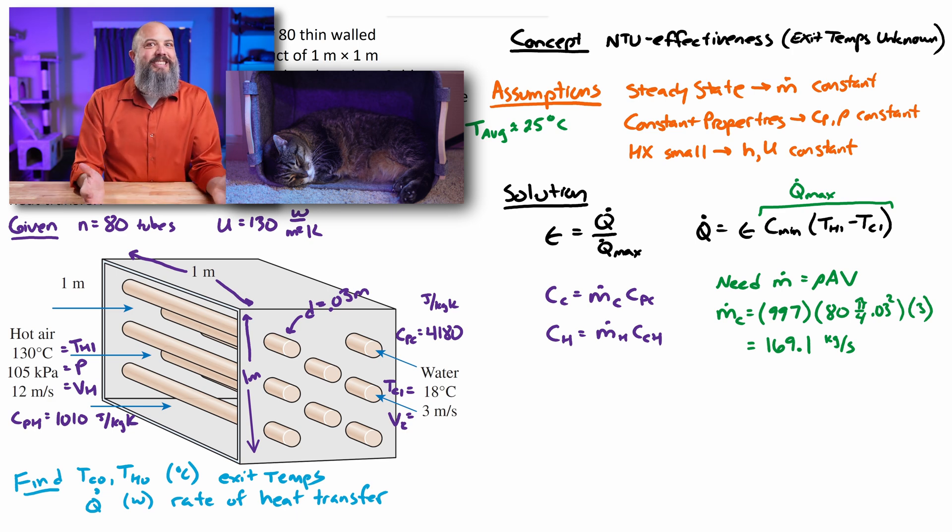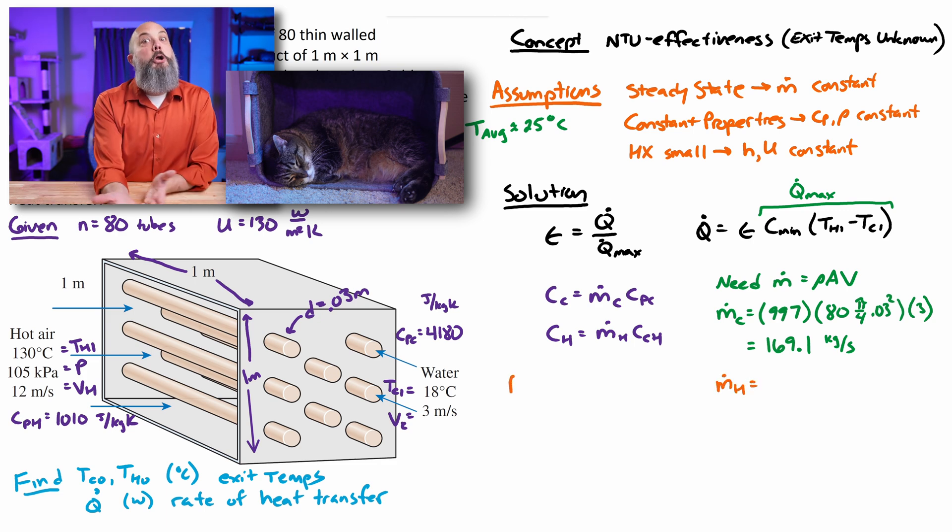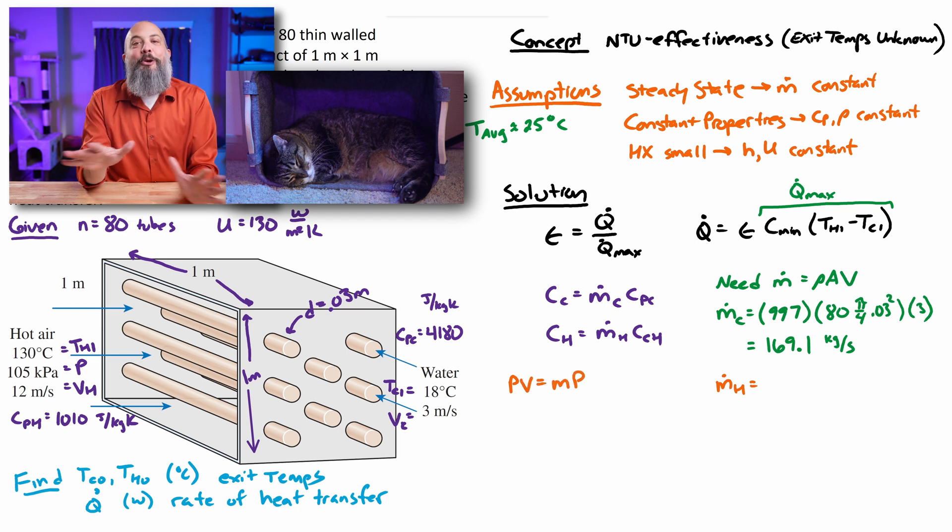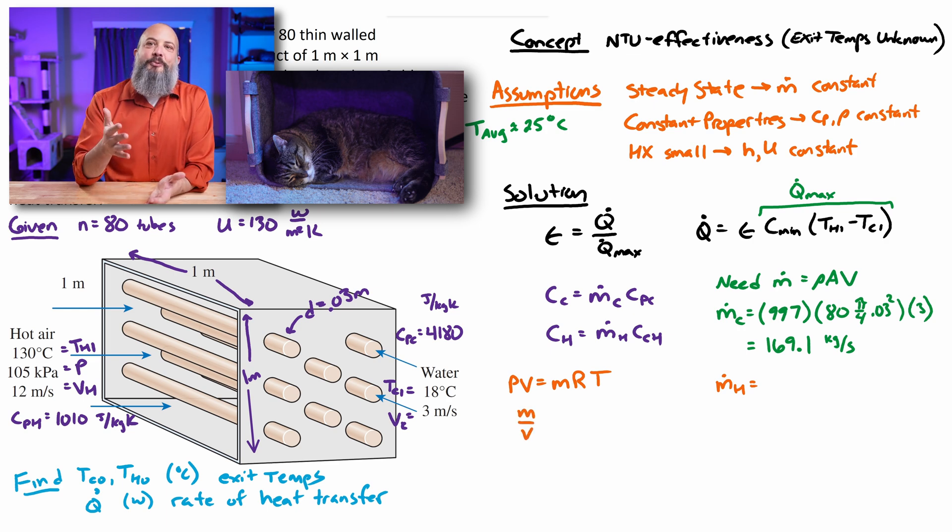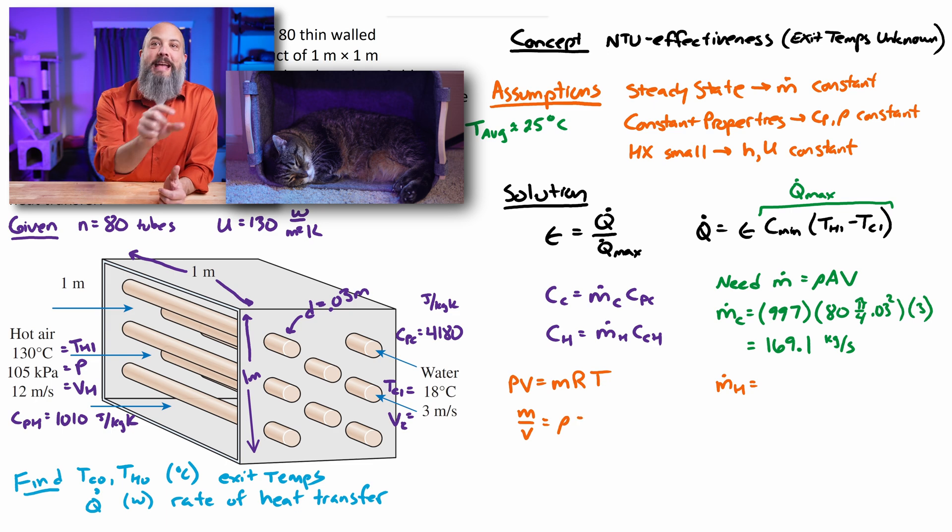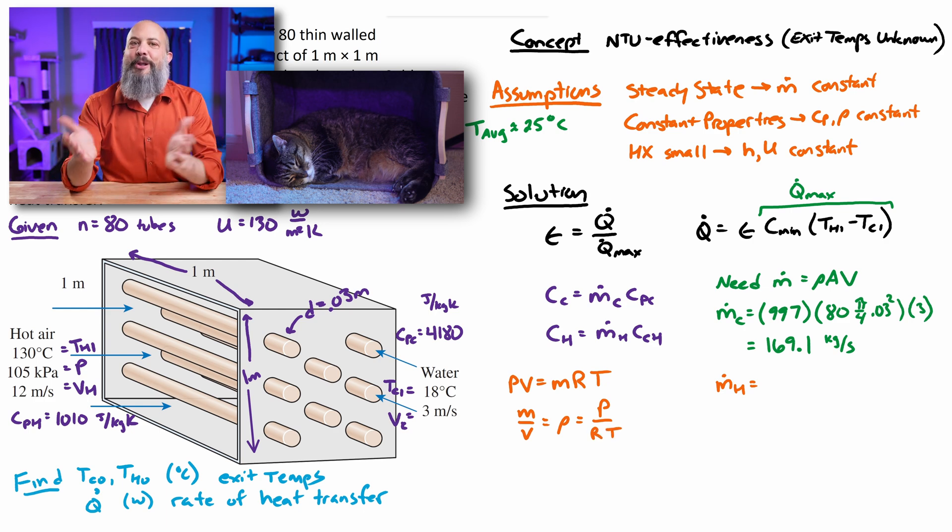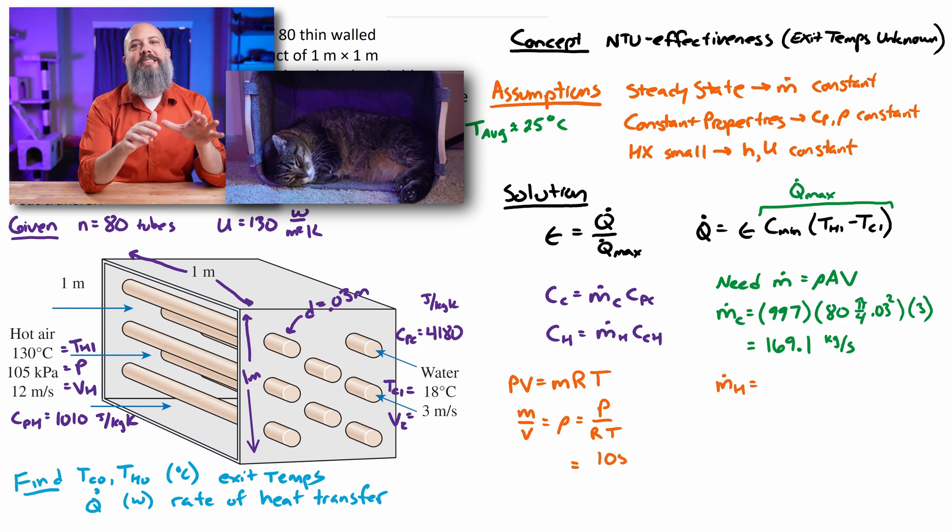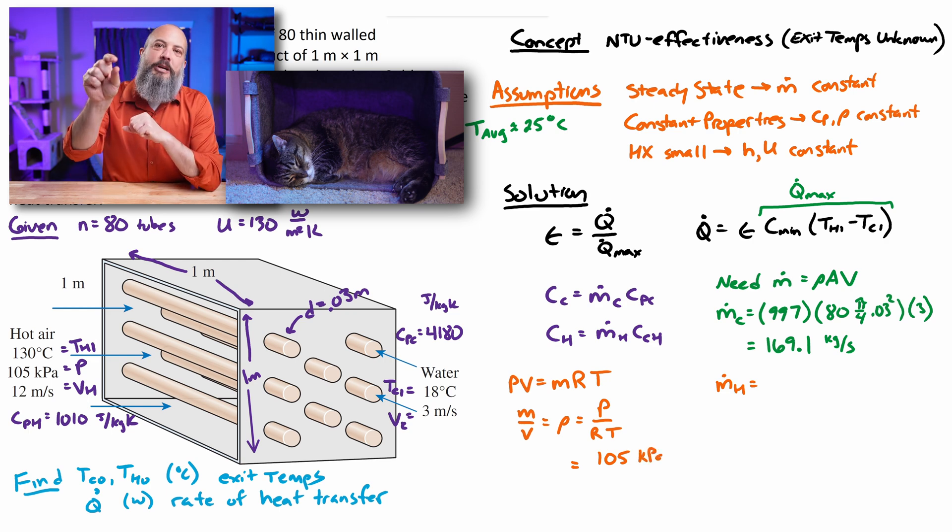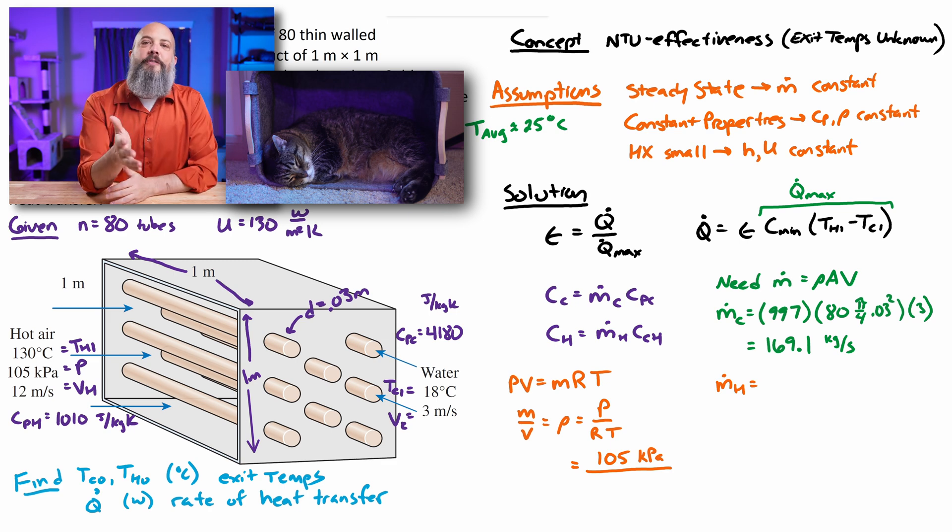For the hot flow, this is a gas. So we'll go back to the ideal gas equation, PIVMERT. So M, I'm going to rearrange this. M divided by V is density, right? Because we're looking for mass flow rate, Rho A V density, cross sectional area times velocity. We were given that cross sectional area, 1 meter by 1 meter. And we're given velocity for the flow, 12 meters per second. So we're really looking for density. So rearrange the ideal gas law, density equals P pressure divided by RT. The pressure was given 105 kPa.